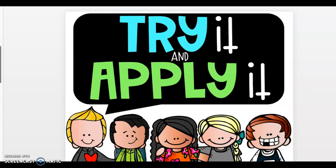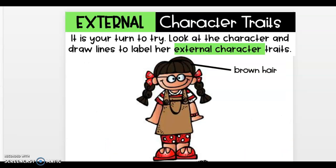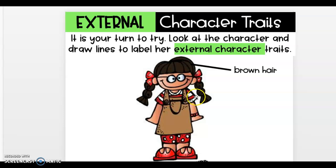We are going to try this and apply it. Here is an external picture of a little girl, so we're going to be thinking of the outside of her. What can we see? Look at the character and draw lines to label her external character traits. We can see she has brown hair in braids, with red bows. She has glasses, she likes brown and red, she's wearing a striped shirt, a bracelet, and leggings.